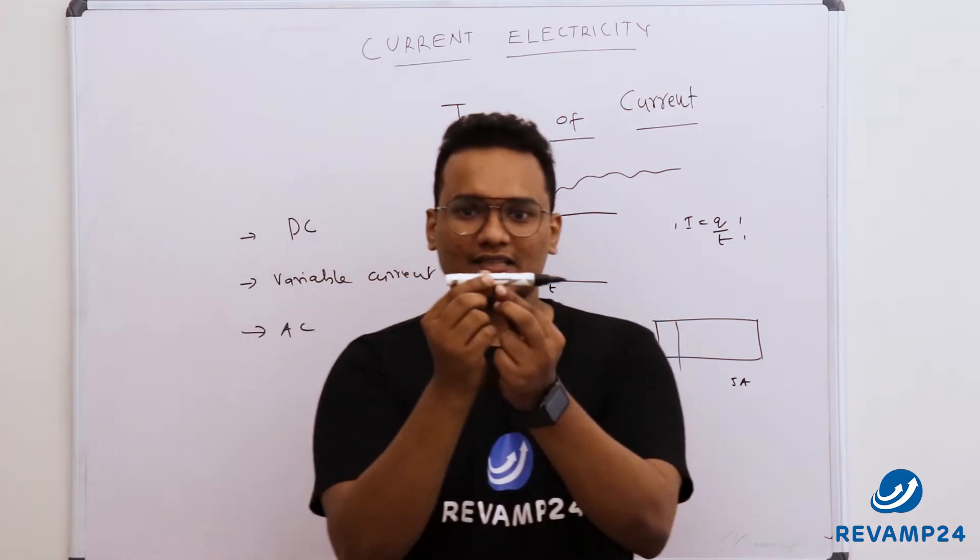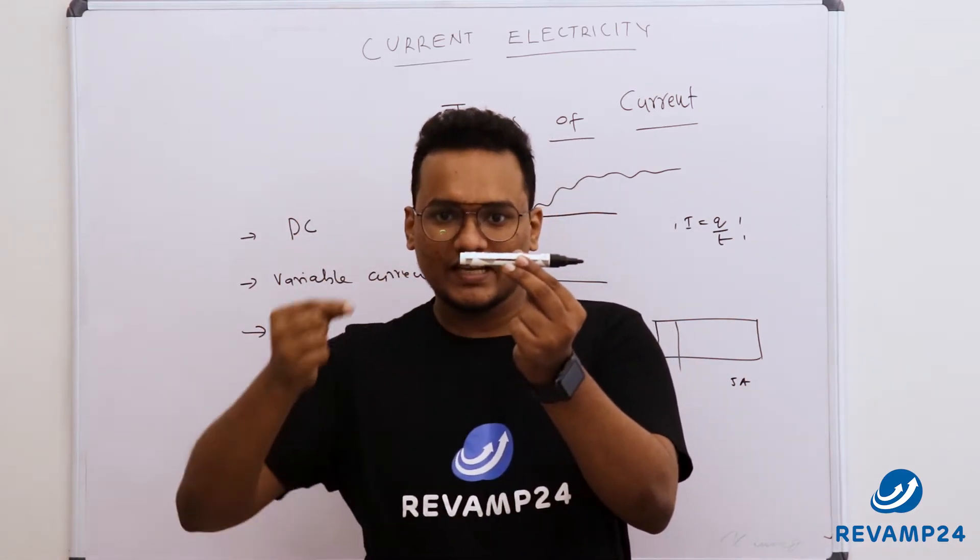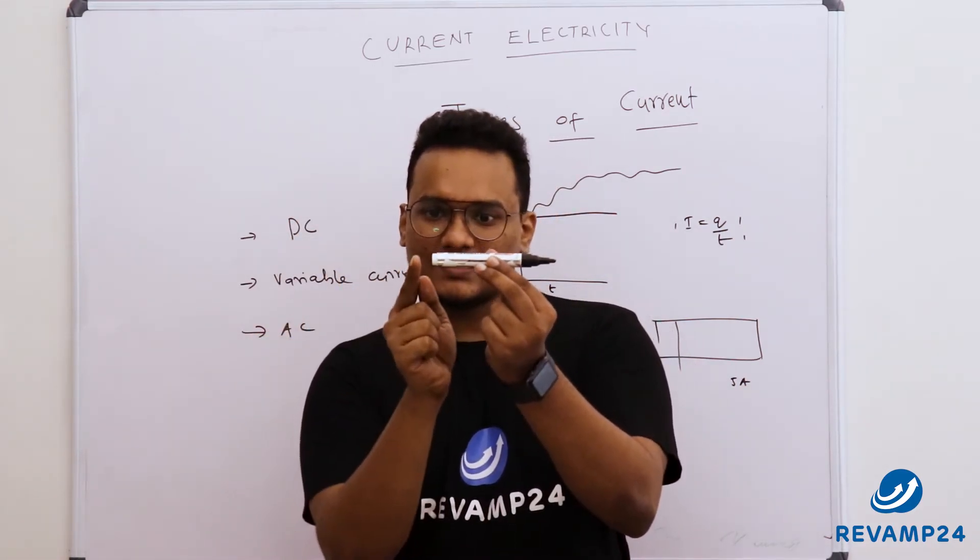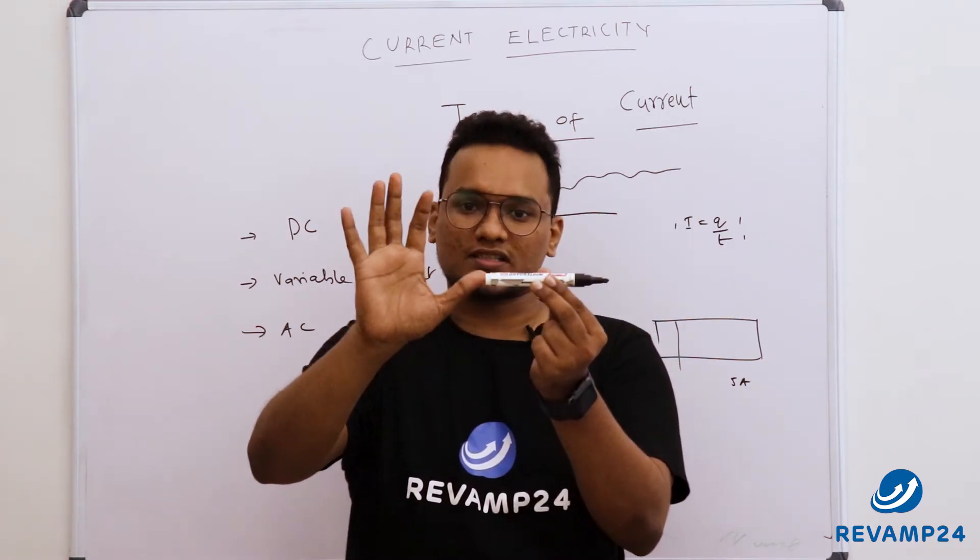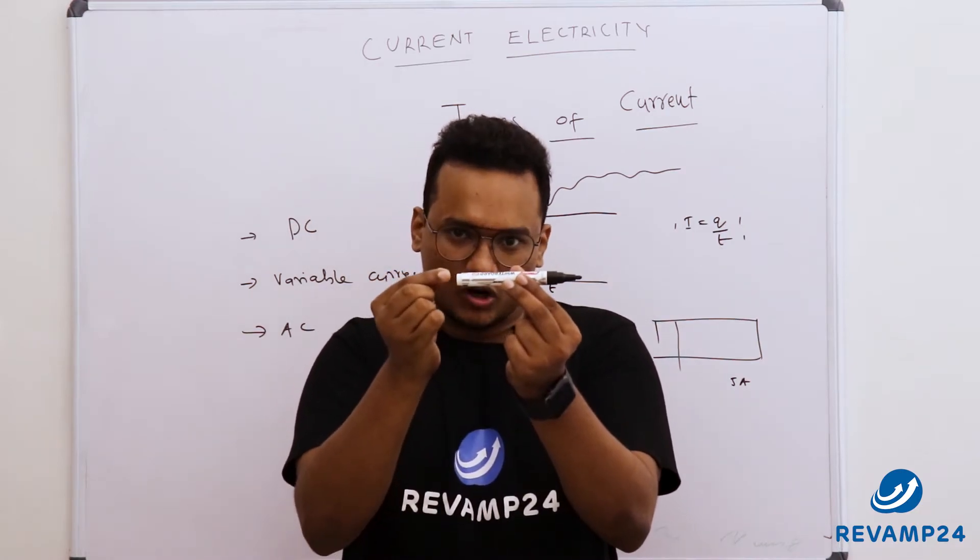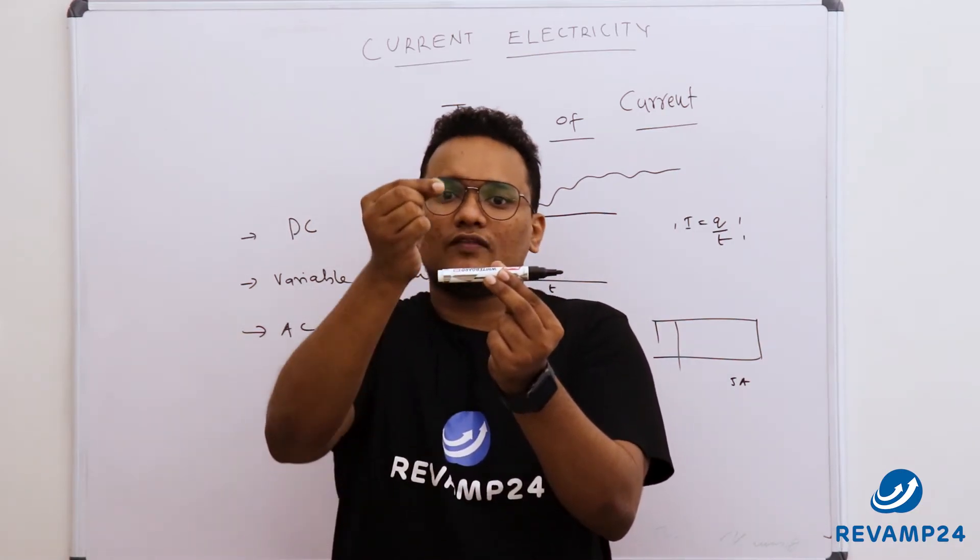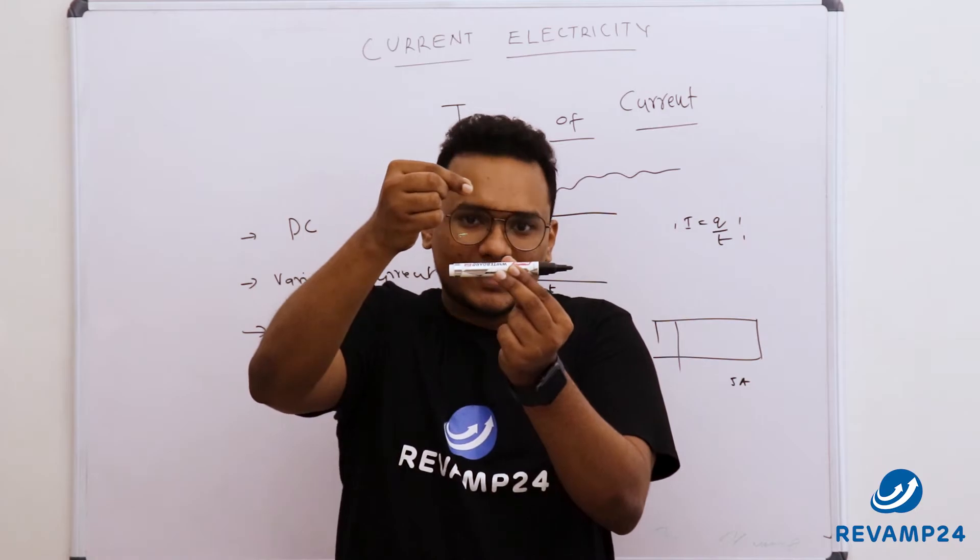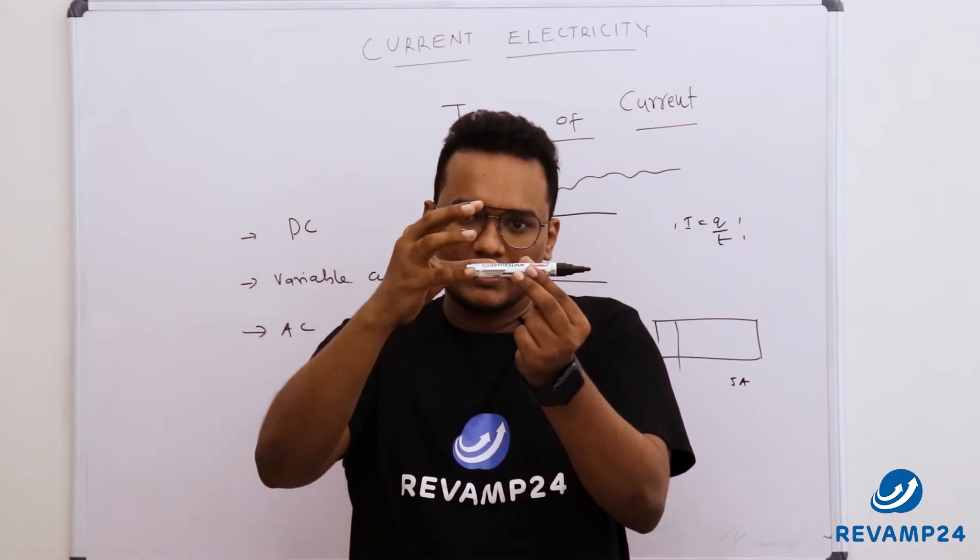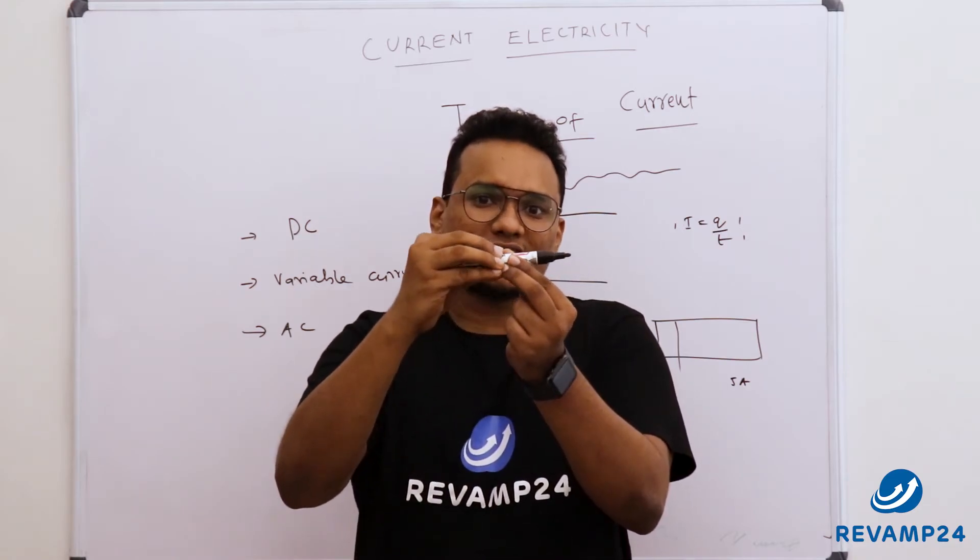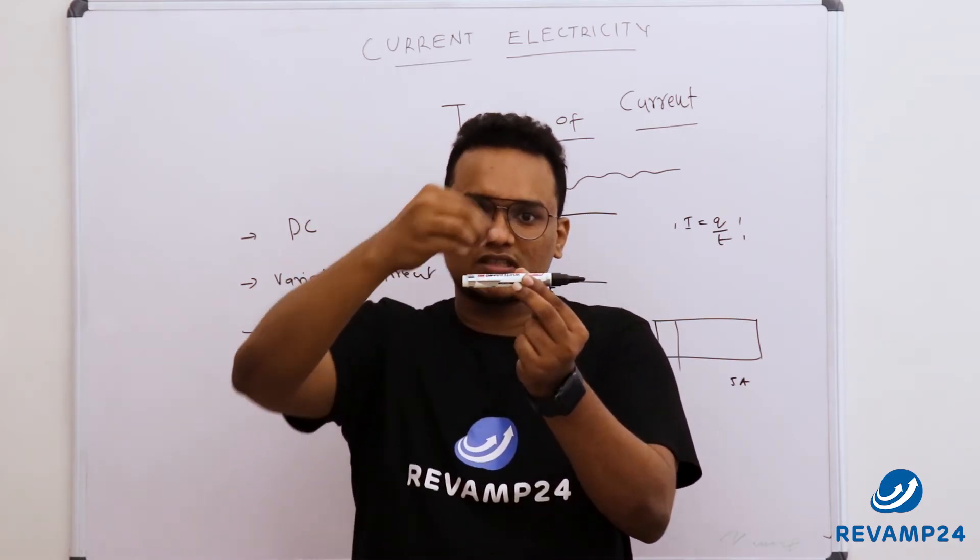This is a conductor, right? Now in AC current, see, let's say this is positive, this is negative. Now current will pass through this but it is not constant. That will start from zero and that will increase all the way to a maximum value, then the current will decrease. So what will happen? Current starts from zero, will increase, then decrease. Now what is the direction of current here? From positive to negative, or from left to right in my case.